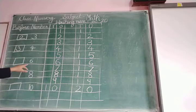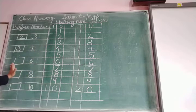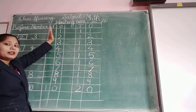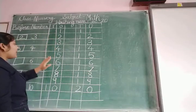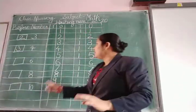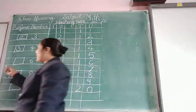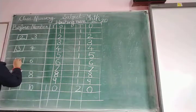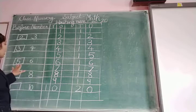Then our next number is number 6. Number 6. Once again, see here. 6 ka pehle kaun sa number pata karna hai. Which is the before number of 6? Reading these numbers: 1, 2, 3, 4, 5, and 6. 6 ke pehle kaun sa number hai? Number 5. So here we write number 5. 5 is before number 6. 5 is the before number of 6 ka.